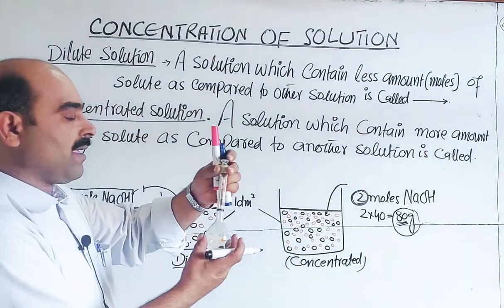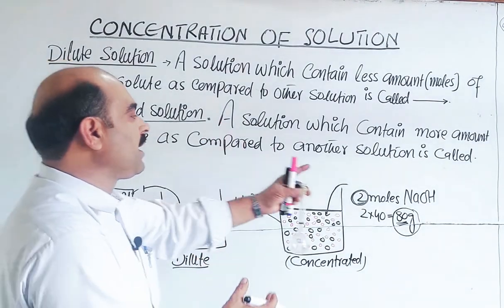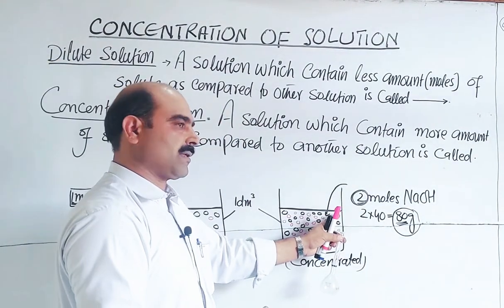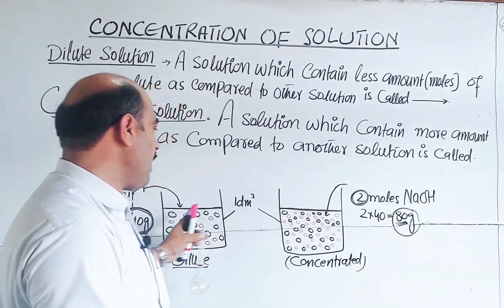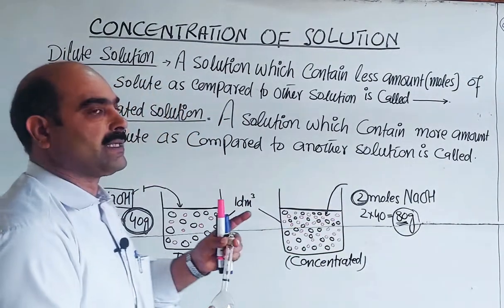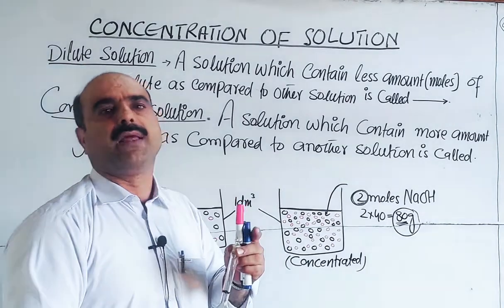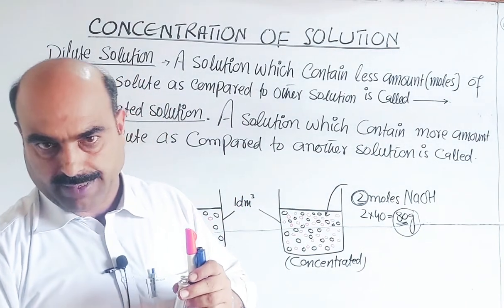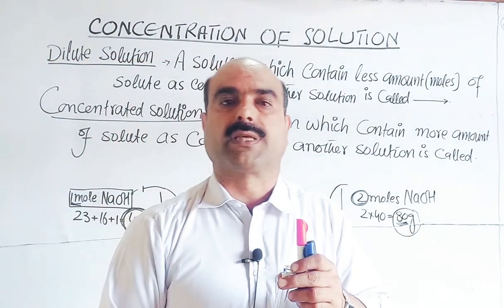In one 100 ml flask, 80 grams are dissolved — that is the concentrated solution. In the other, less is dissolved — that is the dilute solution.